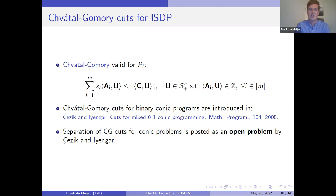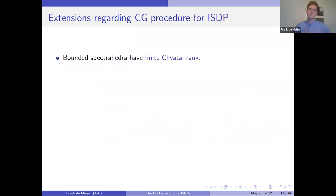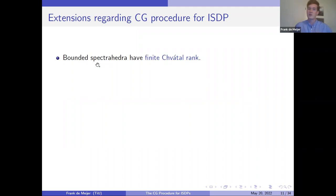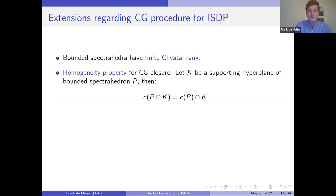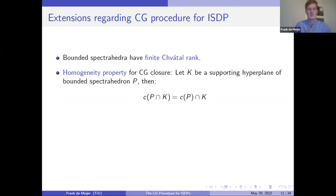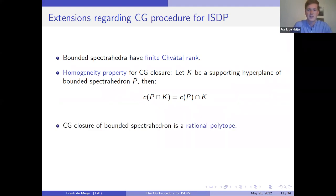Before going there, I'd like to share more theoretical results on this procedure — extending well-known results from the linear case to integer semi-definite programming. The first result you've already seen: for bounded spectrahedra, which are convex and compact, we know they have finite Chvátal rank. In the paper we give a simplified proof of that property and also for the homogeneity property of the closure: if we take a supporting hyperplane K that supports spectrahedron P, then taking the intersection with that hyperplane and taking the CG closure commute — those two operators can be interchanged.